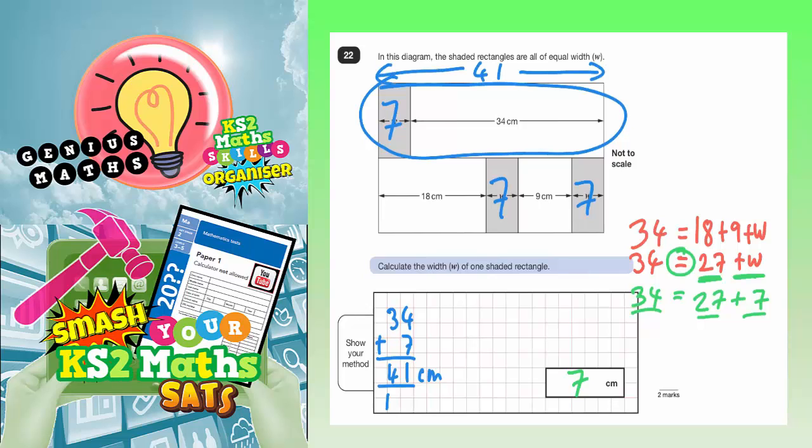Now, hopefully, once we've included the two 7s down at the bottom here, and added it onto this 18 and this 9, that should also equal 41. So, let's double check.